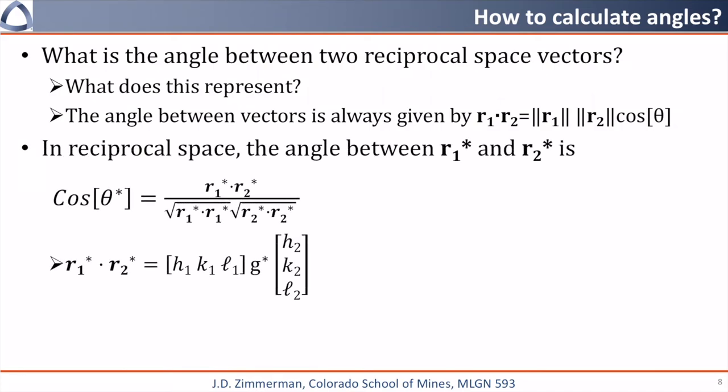We can rearrange this as cosine theta is equal to R1 star dot R2 star divided by the square root of R1 dotted with itself times the square root of R2 dotted by itself, which would be given by the equation here.